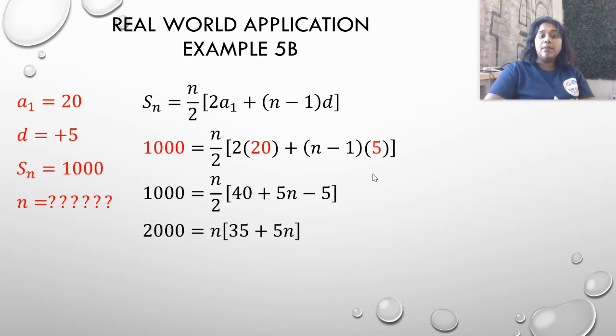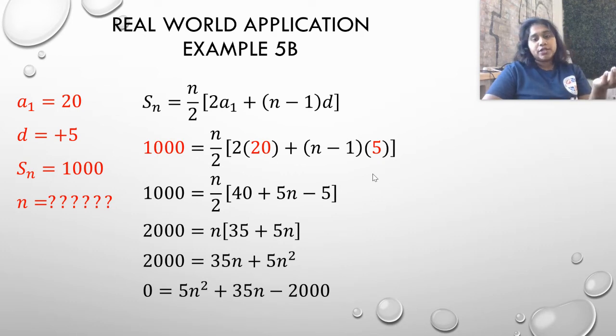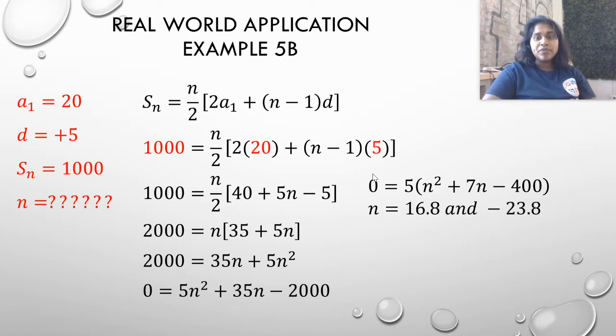And I end up with an n squared value. Well, hey, look at that. We end up with that quadratic formula I told you that we're probably progressing towards. And we deal with second difference as we tend to be progressing towards a quadratic formula. So I'm going to solve this like a quadratic formula. I set it equal to zero. If I wanted to, I could take out a common factor of five. And now I'm going to actually have to use a calculator to finish this solve. And I end up solving for n getting either 16.8 or negative 23.8.